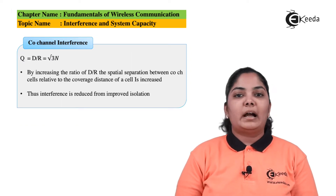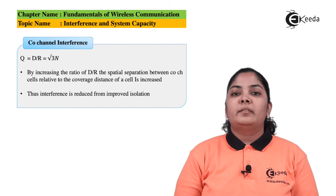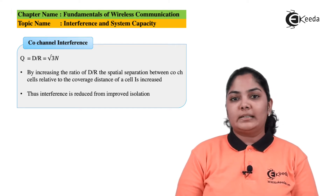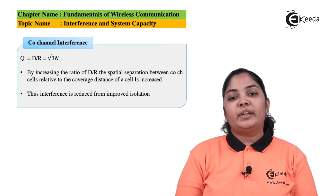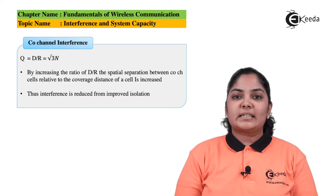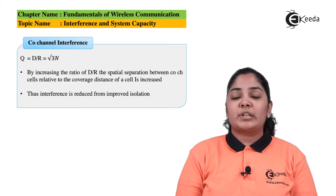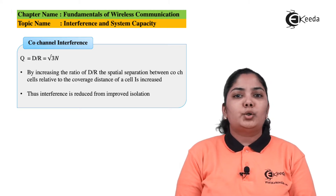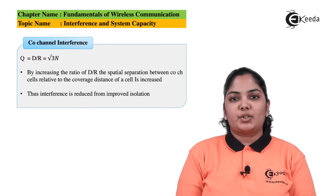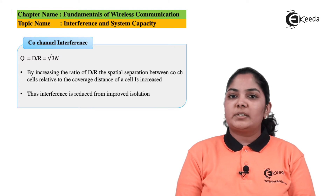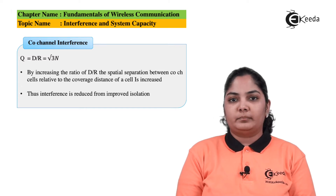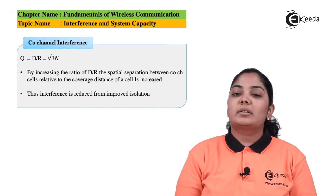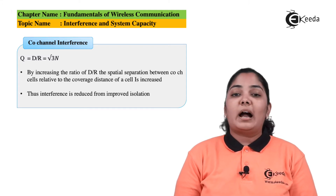By increasing the ratio D/R — where D is the distance between co-channel cells and R is the radius of an individual cell — we increase the distance between co-channel cells while reducing the cell radius. This means two cells of smaller radius are far apart from each other, making co-channel interference between them minimum or negligible, effectively isolating them from each other.